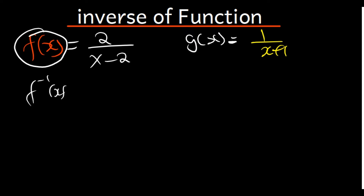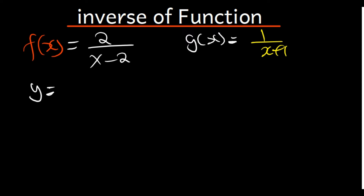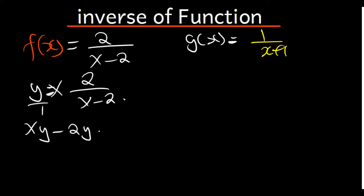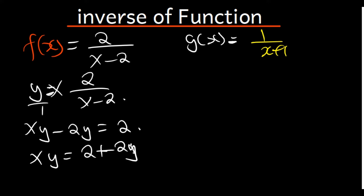For example, we have f(x) = 2 over (x minus 2). Where there is f(x), I'm going to replace it with y, so y equals 2 divided by (x minus 2). My goal is to make x the subject of the formula. I'll cross-multiply, giving xy minus 2x equals 2, then I'll shift 2y to the other side.